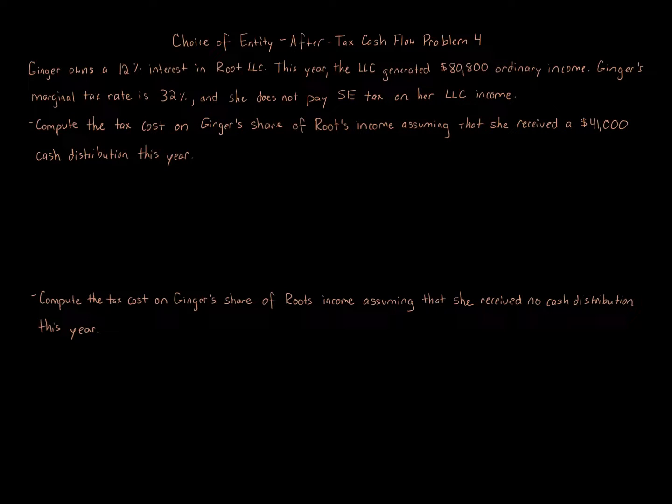This is a choice of entity after-tax cash flow problem. Ginger owns a 12% interest in Root LLC. This year the LLC generated $80,800 of ordinary income. Ginger's marginal tax rate is 32%, and she does not pay self-employment tax on her LLC income. Part one: compute the tax cost on Ginger's share of Root's income assuming that she received a $41,000 cash distribution this year. Part two: compute the tax cost on Ginger's share of Root's income assuming that she received no cash distribution this year.